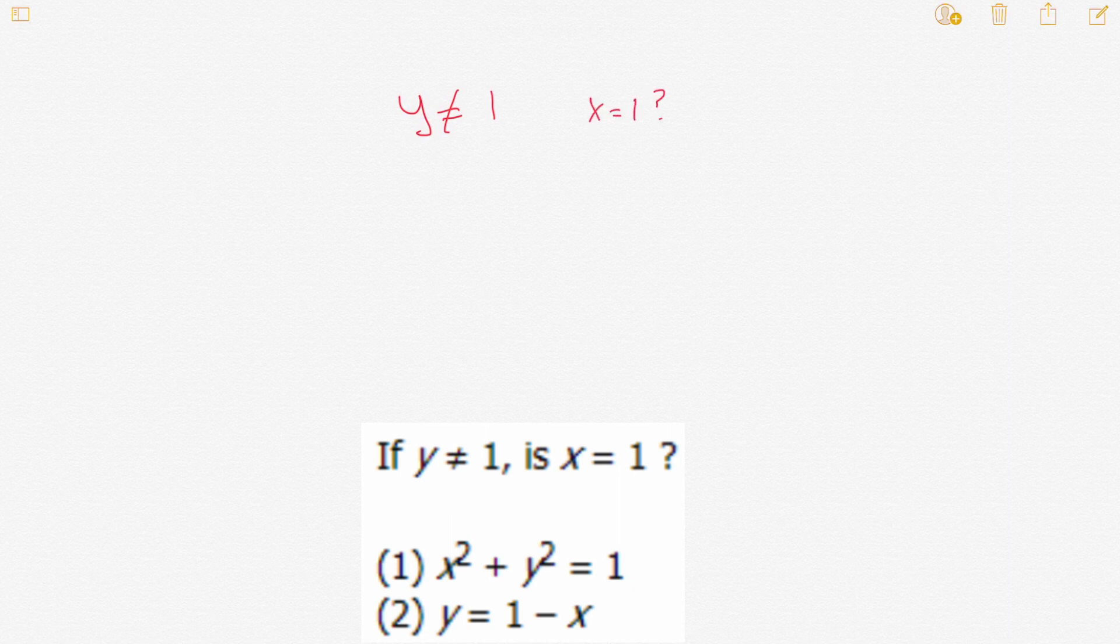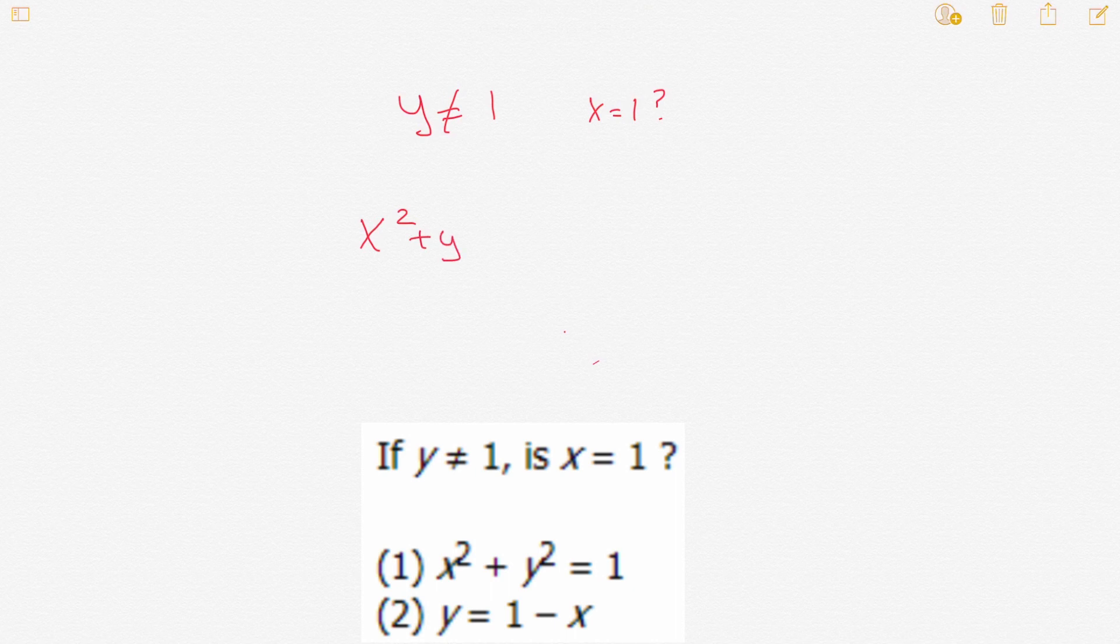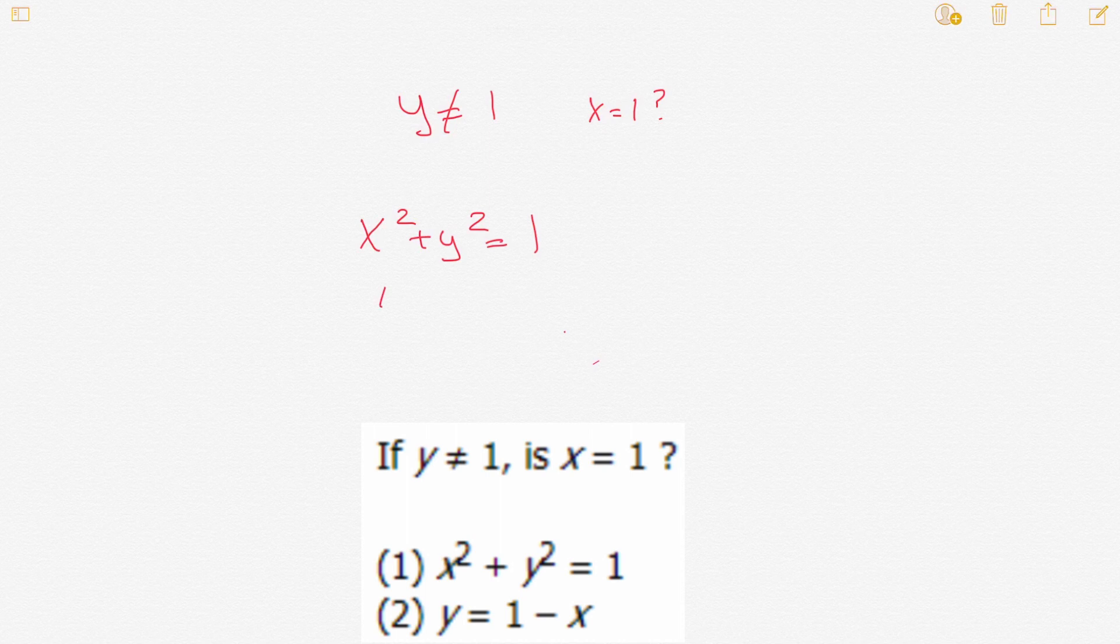Let's see if the data is sufficient. The first data is x squared plus y squared equals 1. Now both x squared and y squared has to be positive, right? Because any number squared has to be positive. For example, x squared could be 1 and y squared could be 0.